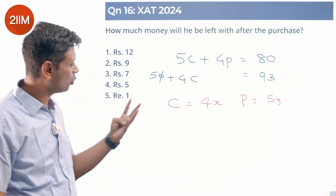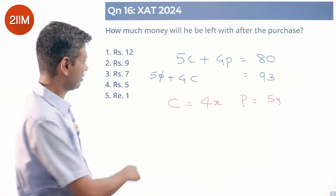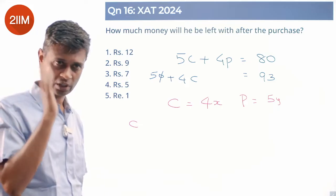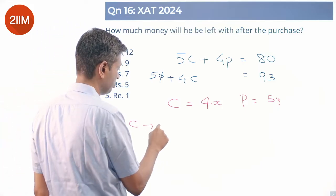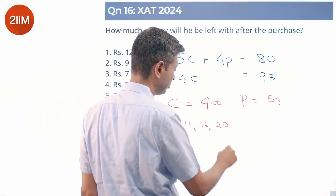So cabbage could be 4, or 8, or 12, or 16, something like that. So the cost per kilogram of cabbage could be 4, 8, 12, 16, 20, something like that.